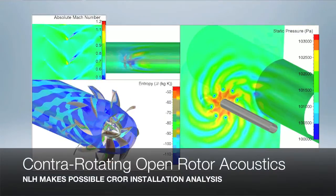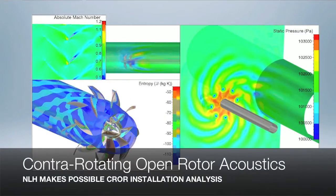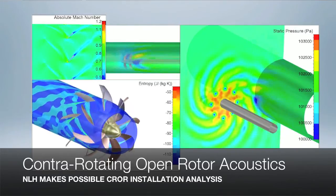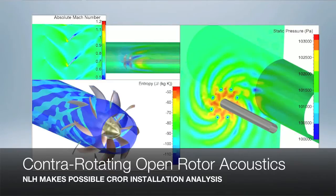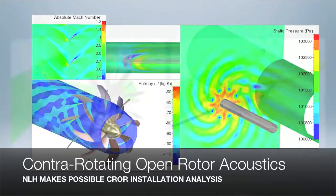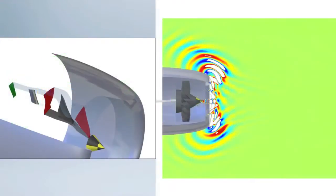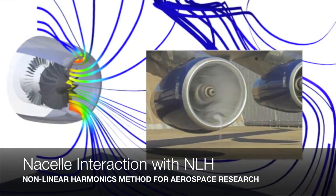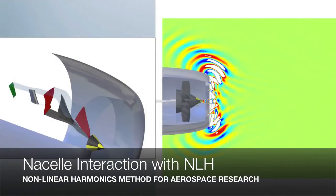The next slides show the application of NLH to open rotor. This is an application where the gap between NLH and the standard unsteady analysis is very large because of the very small time scales needed in a standard analysis. NLH can also be used to model the interaction between a fan, the nacelle, and the ground, and obtain the unsteady pressure signal.